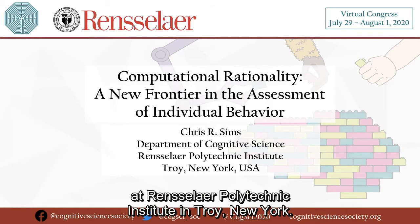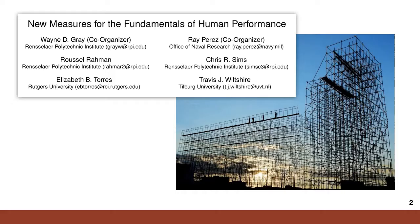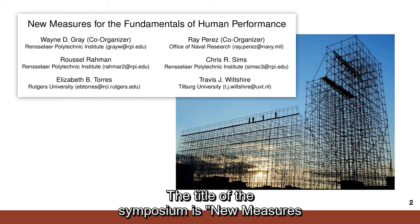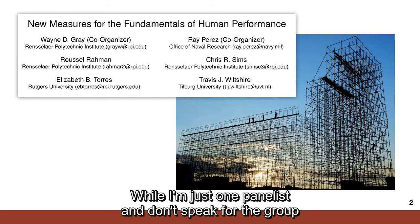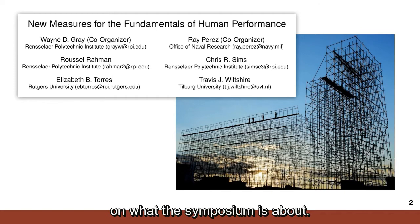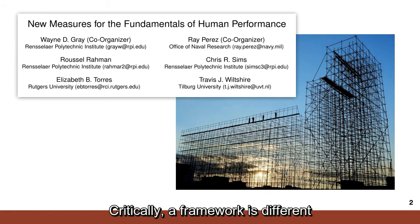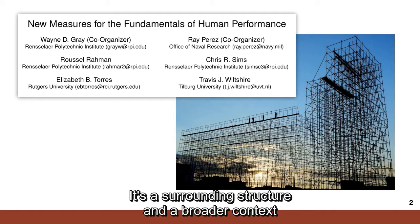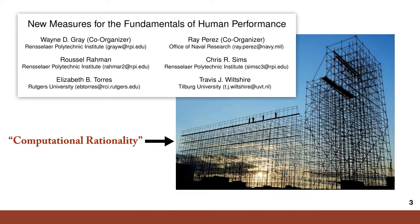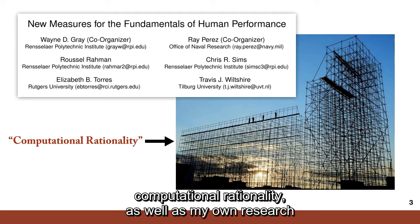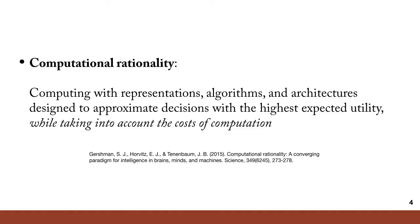Hi, I'm Chris Sims. I'm an assistant professor in the cognitive science department at Rensselaer Polytechnic Institute in Troy, New York. The title of the symposium is New Measures for the Fundamentals of Human Performance. To me, the symposium is about the idea that cognitive science is constantly searching for new and better frameworks. Critically, a framework is different than a theory or an experiment — it's a surrounding structure and broader context in which to build a new theory or understand a new experiment. In this talk, I'll describe one particular framework, computational rationality, as well as my own research working in one specific corner of this much larger framework.